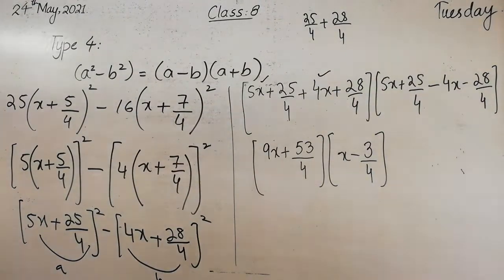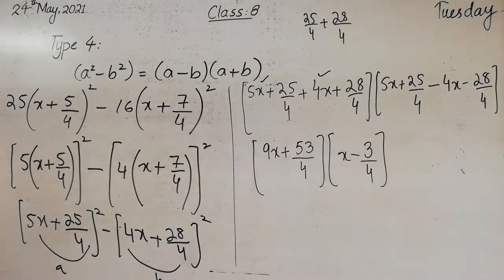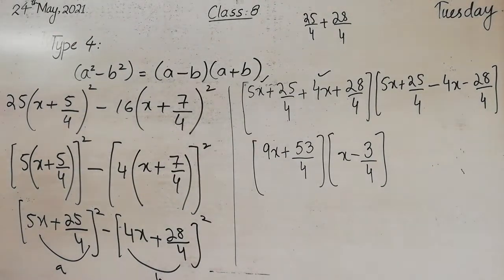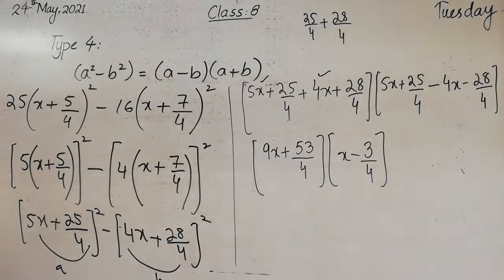This is the final factorization of the given expression. First we wrote 25 and 16 in the form of whole squares. After that, we multiplied 5 and 4 inside. After multiplying, we had A and B terms. Then we wrote them in the form A plus B into A minus B, and after writing them in that form, we simplified to get the most simplified answer.